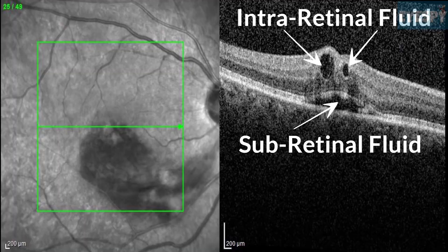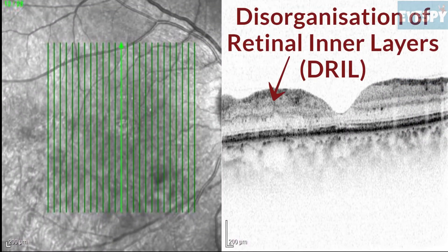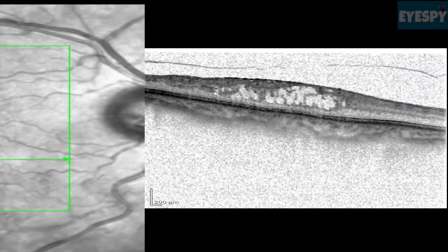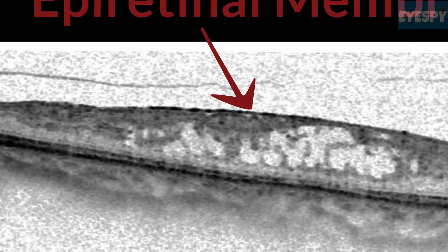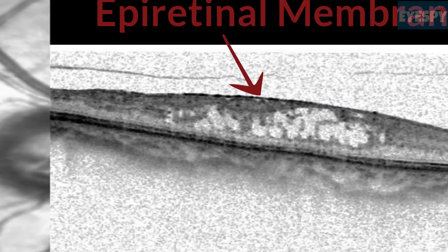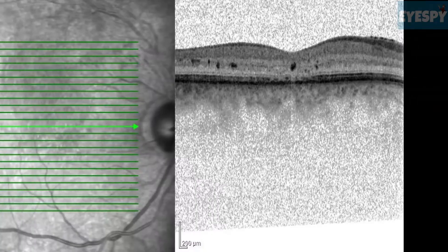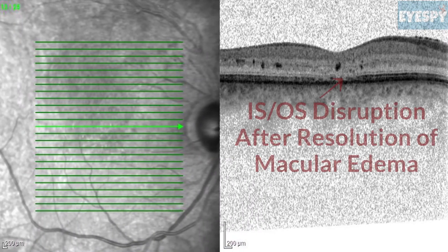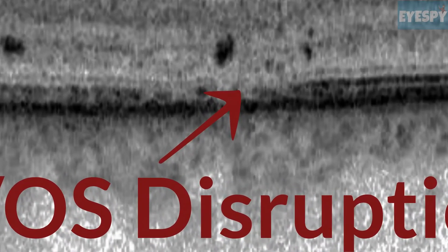Disorganization of the retinal inner layers (DRIL) may be seen. Epiretinal membrane appears as a hyperreflective layer over the innermost layer of the retina. After resolution of macular edema, there may be ellipsoid zone (IS/OS) disruption, which is a poor prognostic indicator for visual recovery.